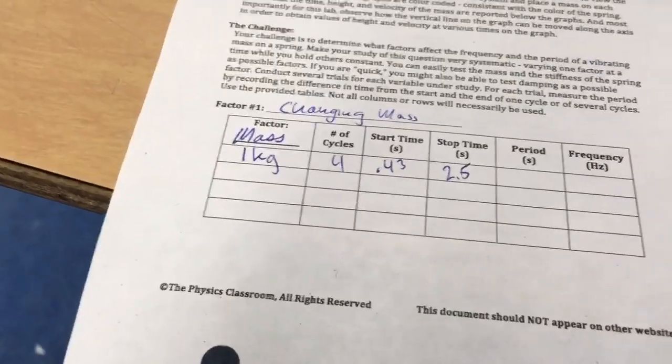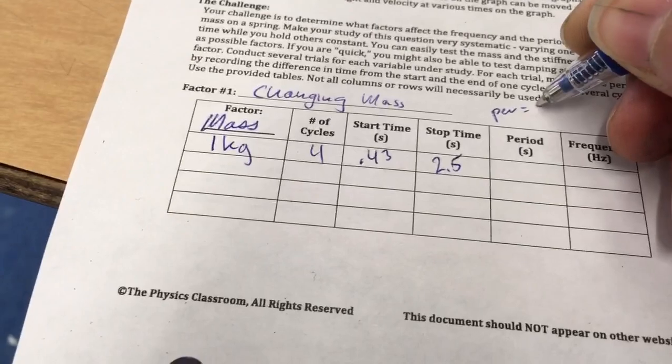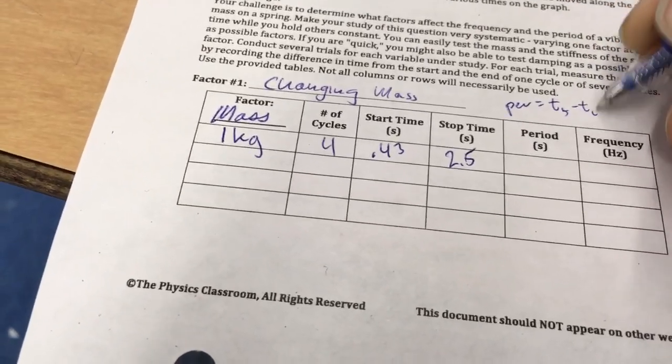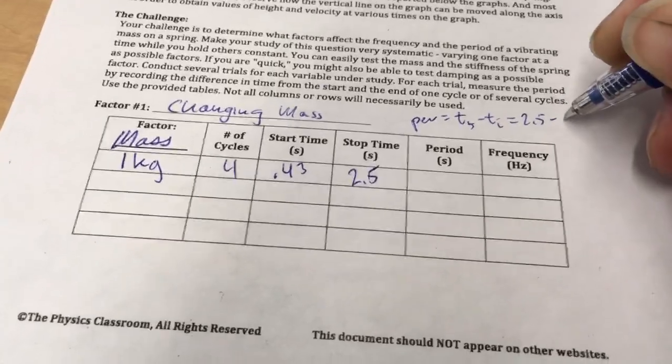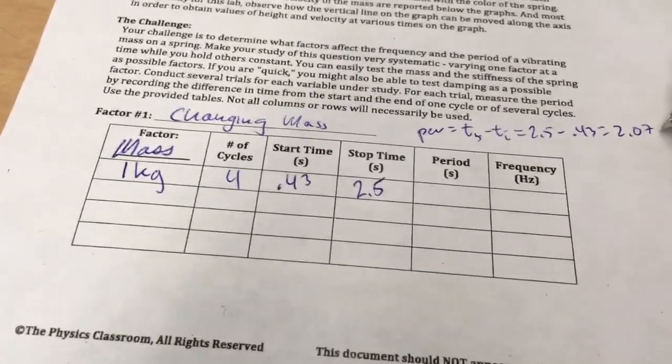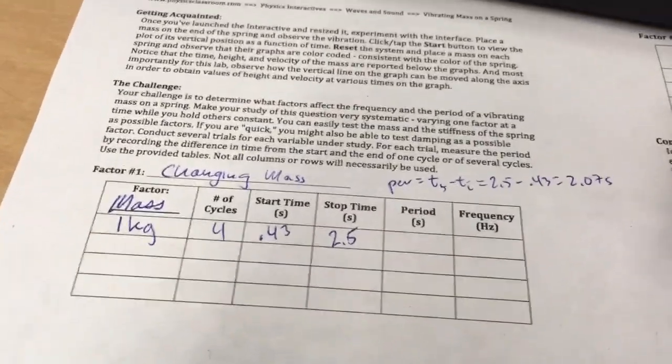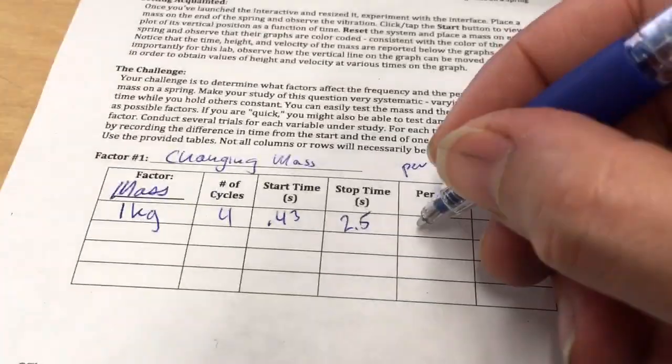Now, the period is the difference between those times. So period is t final minus t initial. And so that's 2.5 minus 0.43, or 2.07 seconds. So that's my period, 2.07 seconds.